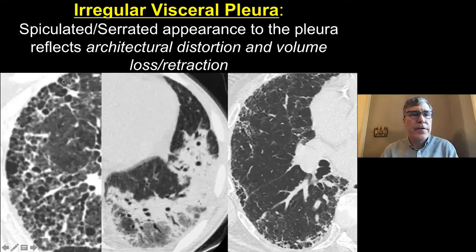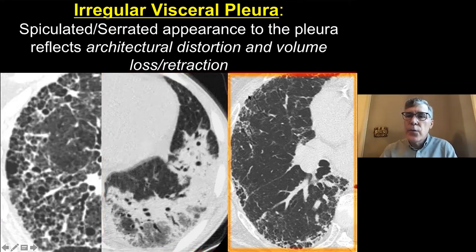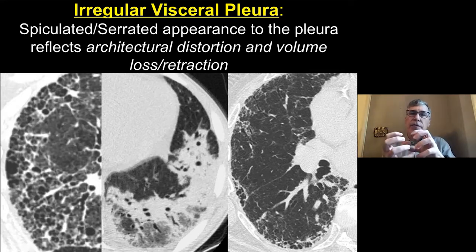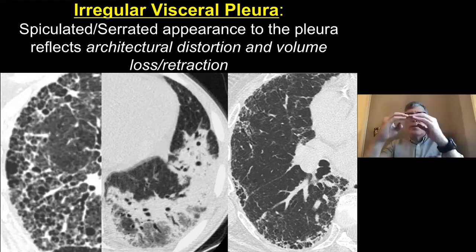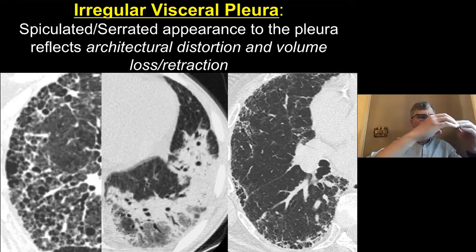Irregular visceral pleura is one of my favorites. The pleura should be nice and sharp. You can see a serrated appearance here — and another one with a little bit of serrated appearance indicating scarring. When you see this kind of serrated or irregular visceral pleura, the underlying parenchyma has evidence of fibrosis or scarring. It retracts and pulls the pleura, tugging it in and giving it that spiculated shape at various points.